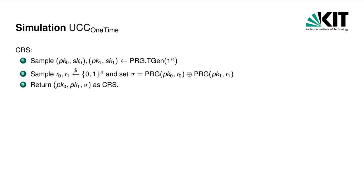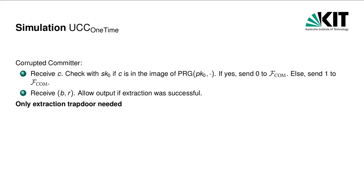The second part sigma of the CRS, which is a uniformly random value, is replaced by the XOR of the PRG evaluated on input pk0 and a random string r0, and the PRG evaluated on input pk1 and a random string r1. As the committer is corrupted, the simulator receives the commitment c. Using sk0, it checks if c is in the range of the PRG used with public key pk0. If this is the case, it sends 0 to the commitment functionality; otherwise it sends 1. In the unveil phase, the simulator receives b and r from the committer and performs the same consistency check as the receiver. If this check succeeds and extraction was successful, it allows the output of the commitment functionality. The simulator only uses the extraction trapdoor.